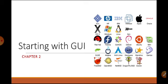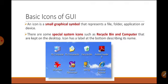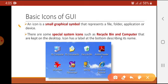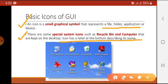Today we are going to learn about the basic icons of Windows operating system. First of all, what is an icon? An icon is a small graphical symbol that represents a file, folder, application, or a device. There are some special system icons such as Recycle Bin and My Computer that are kept on the desktop. An icon has a label at the bottom describing its name.